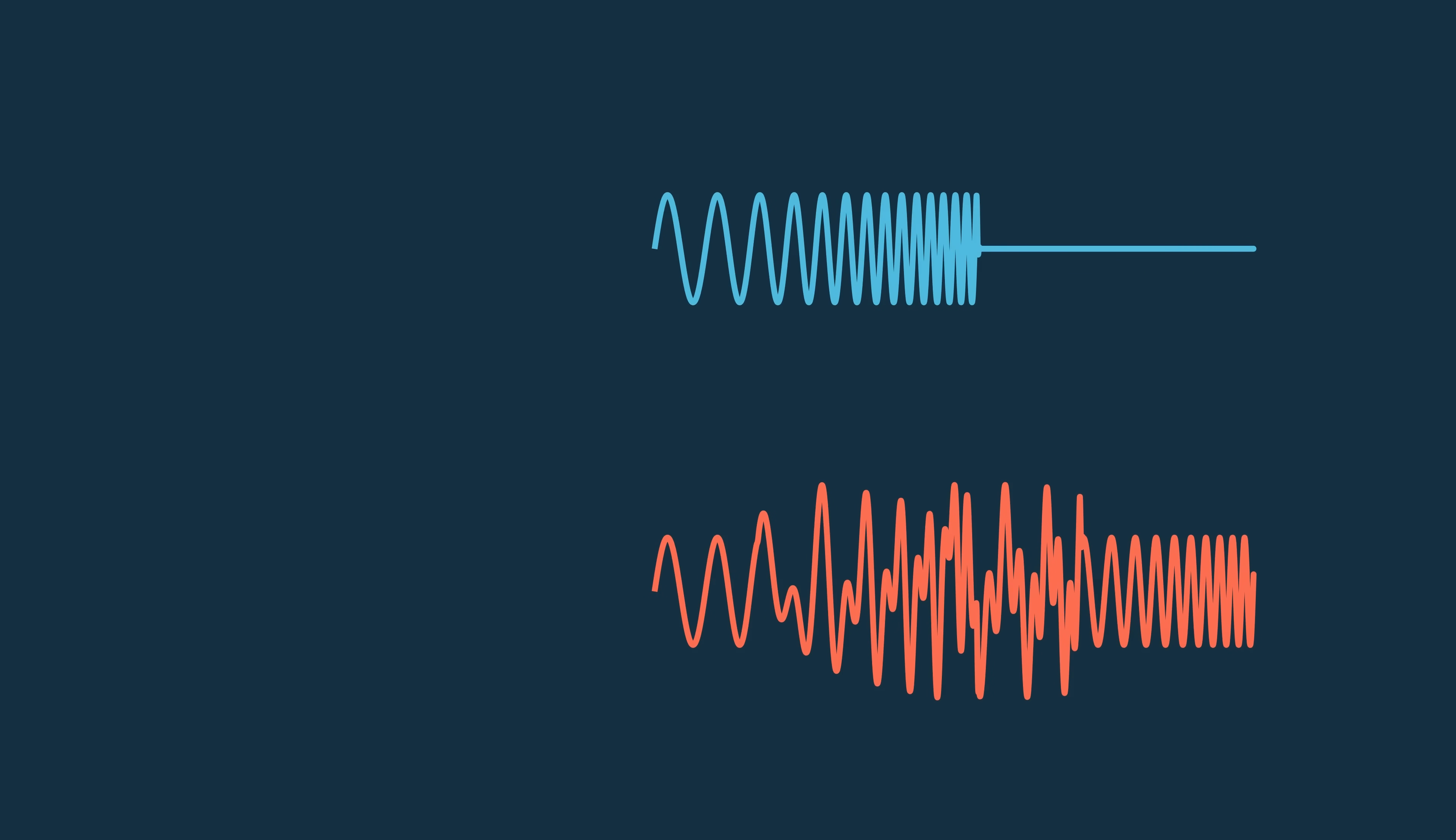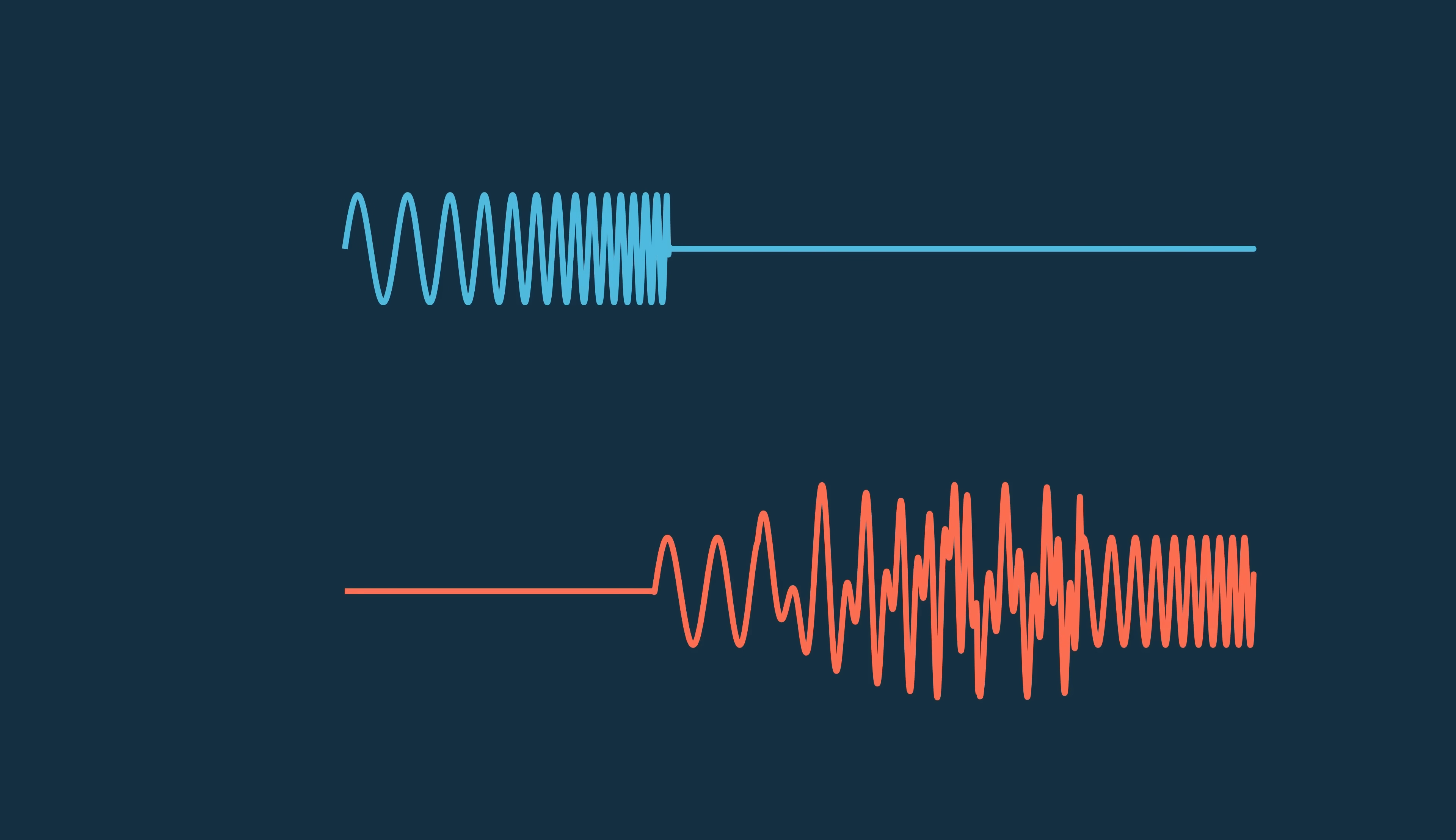The cross-correlation takes the transmit signal, the blue one, and shifts its end to the start of the return signal, the red one.